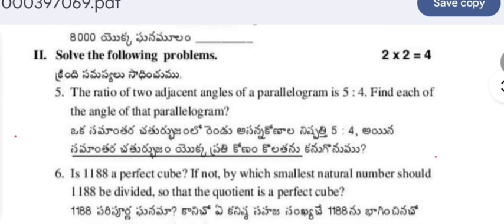Solve the following problems. The ratio of two adjacent angles of a parallelogram is 5:4. Find each of the angles of the parallelogram. In a parallelogram, the sum of two adjacent angles is 180°. The sum of the ratio is 5 + 4 = 9. So divide 180 by 9.